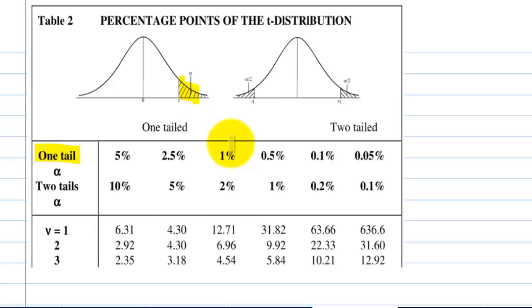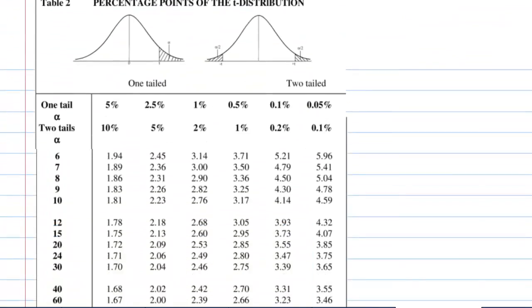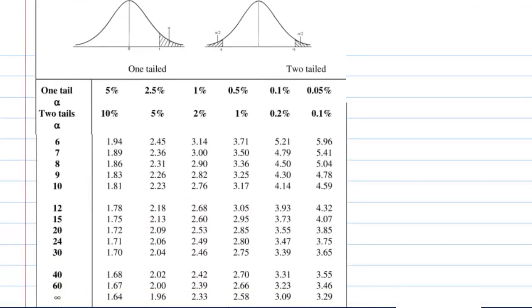Our degree of freedom, which is v here, is equal to 12. So we move down to look for degree of freedom 12.